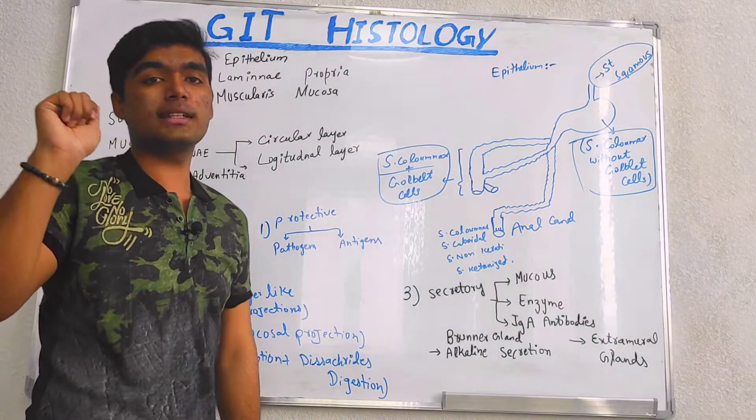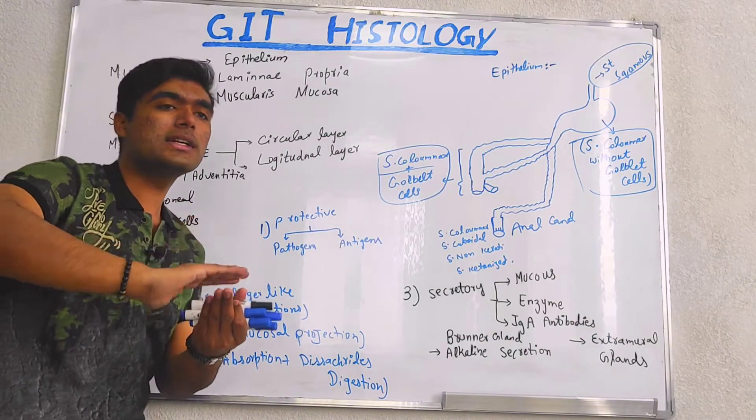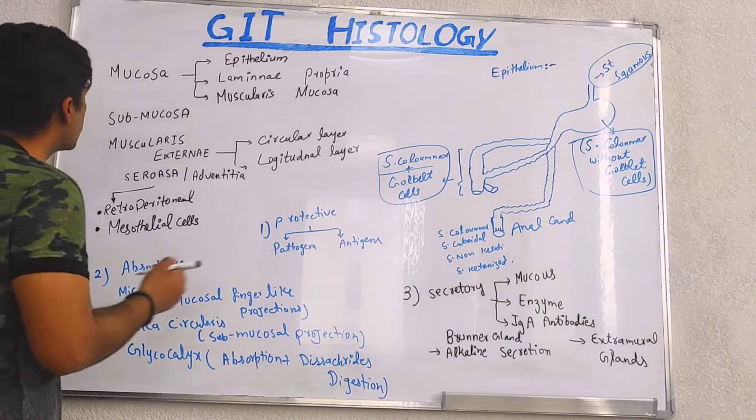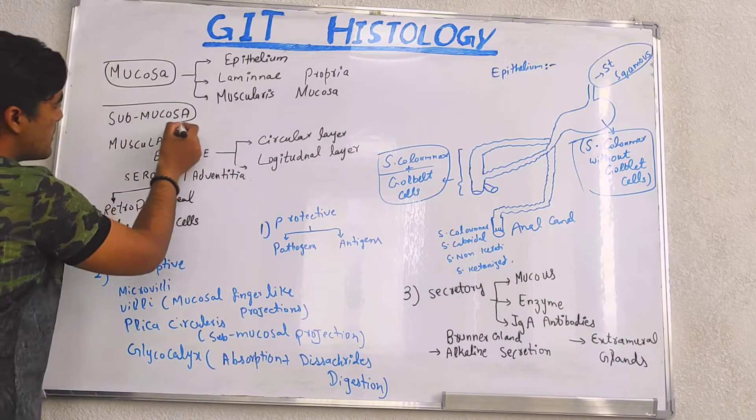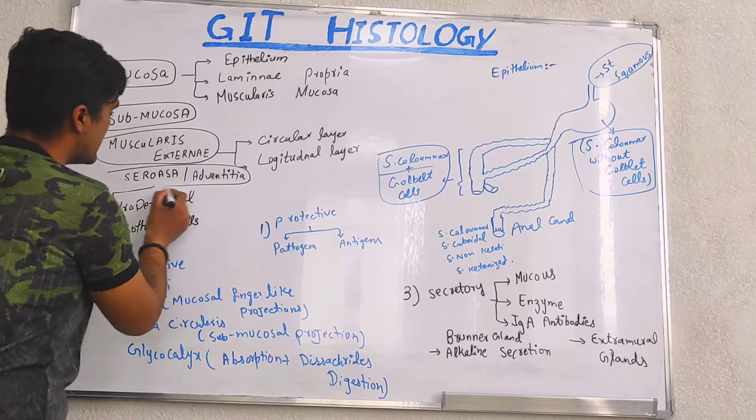When we are going to study something at a tissue level, we have to know its layers and also the sub-layers. So in case of GIT, we have four major layers: mucosa, submucosa, muscularis externa, and serosa or adventitia.